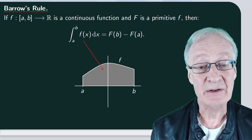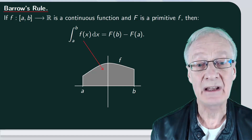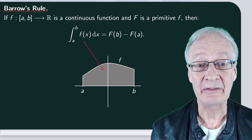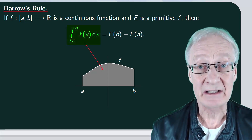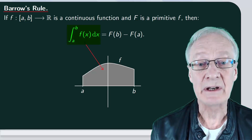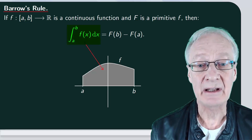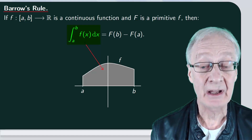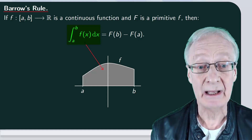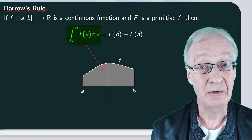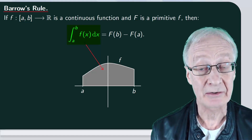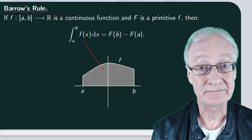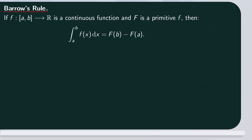In the case where f is not necessarily positive, for that integral we'd add the areas of the parts above the x-axis and take away the areas of the parts below the x-axis. So, we'll start with our proof.